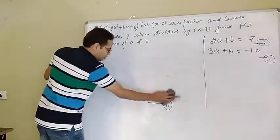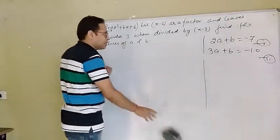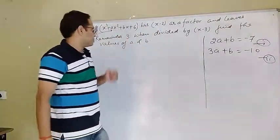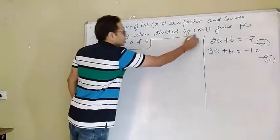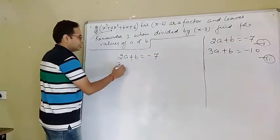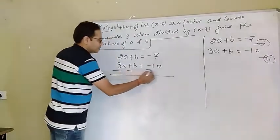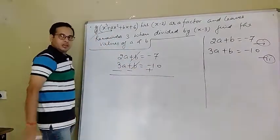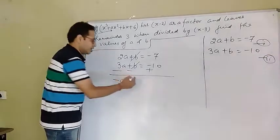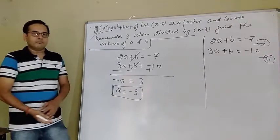We will be solving both equations to get the values of a and b. Try to enjoy mathematics — unless and until you enjoy it, you are not going to learn. Don't get bored; mathematics is a very interesting subject. So: 2a + b = -7 and 3a + b = -10. Subtracting, b and b cancel out, and we get -a = 10 - 7 = 3.